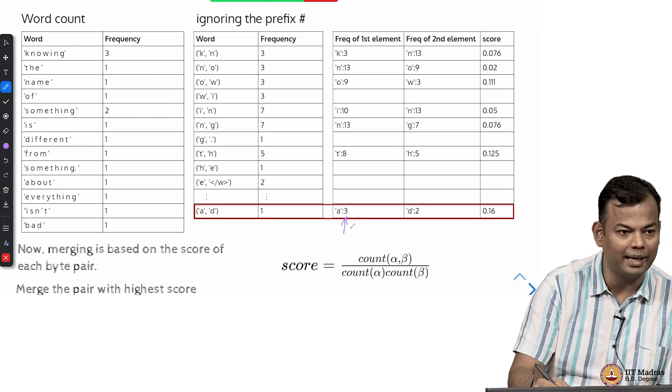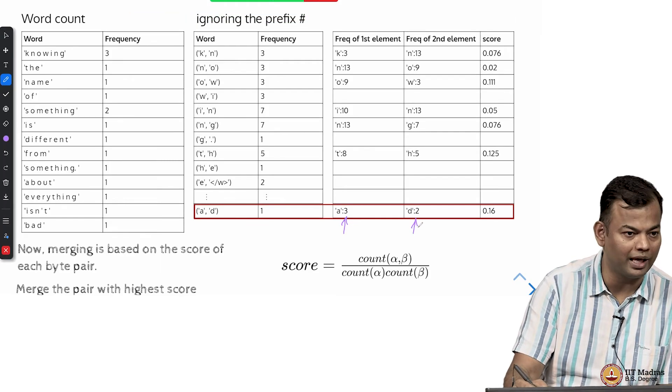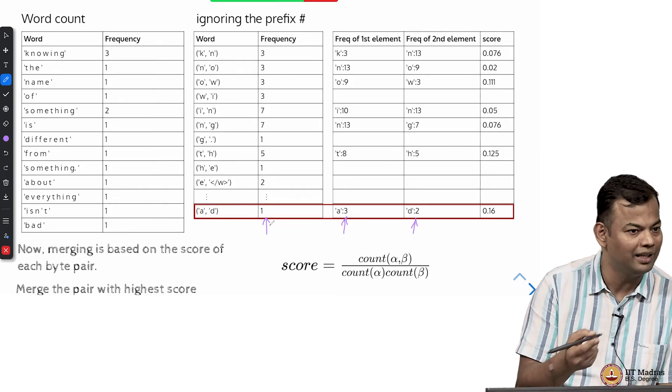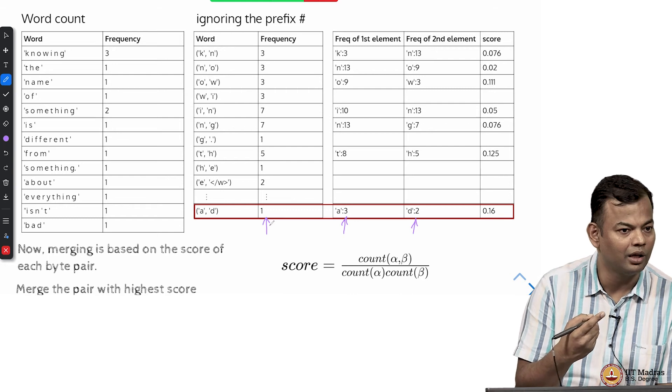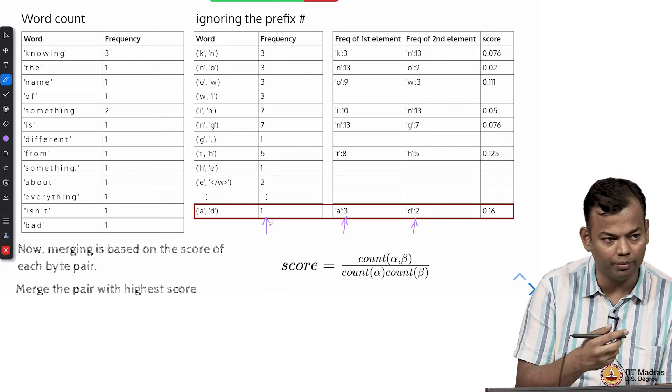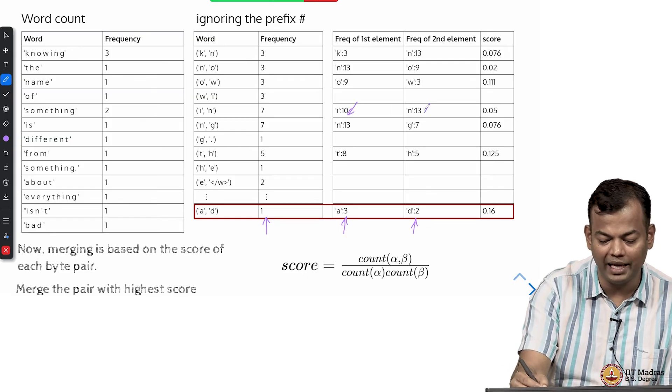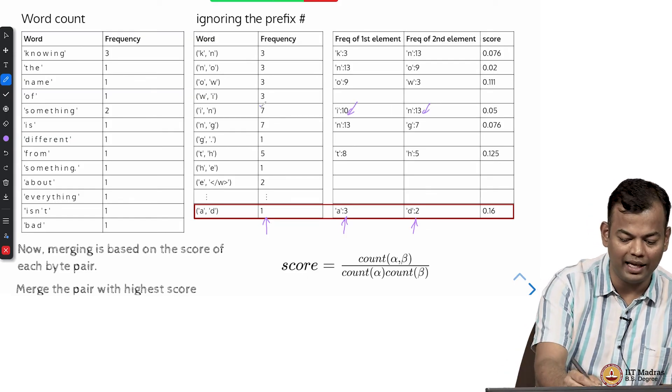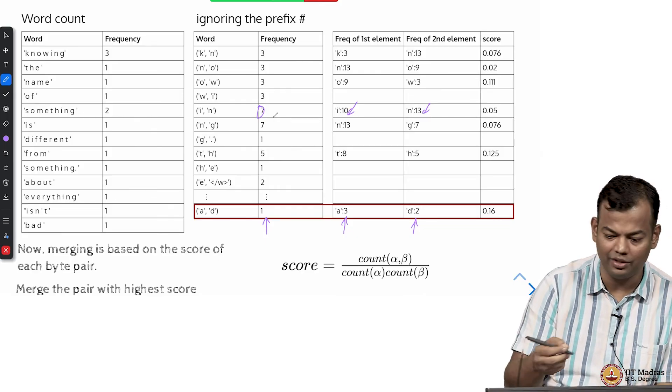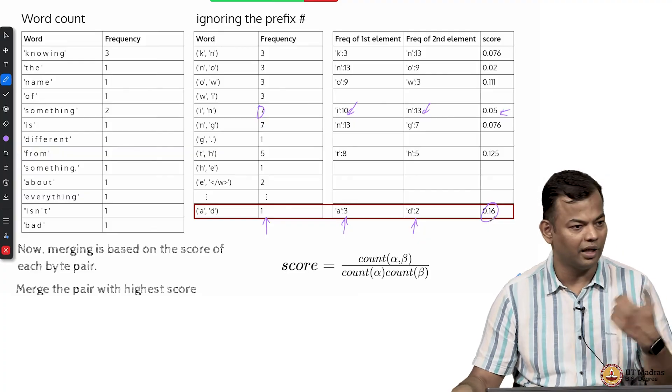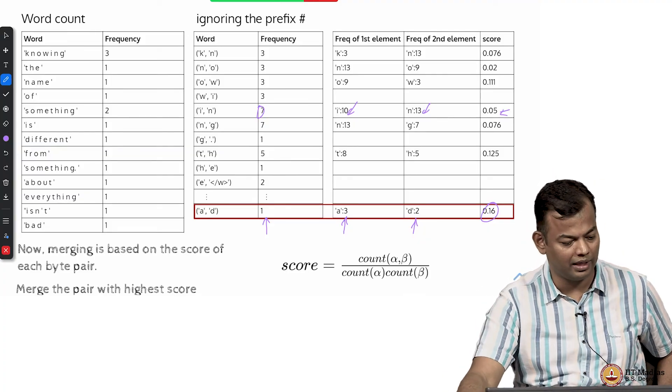A appeared only 3 times, D appeared only 2 times, and AD appeared one time out of that. So that clearly seems like AD is a very prominent merge, as opposed to if I look at I. I is appearing many times, N is appearing many times and IN is appearing 7 times. So that ratio tells me that this is better than the other one.